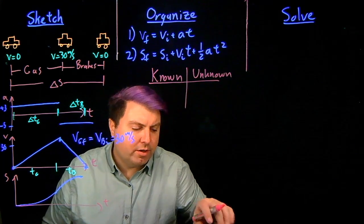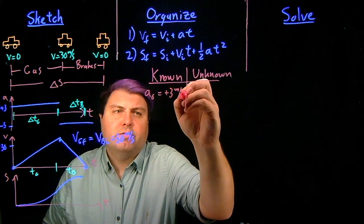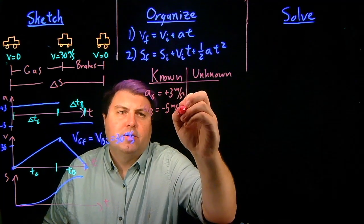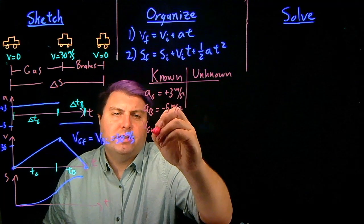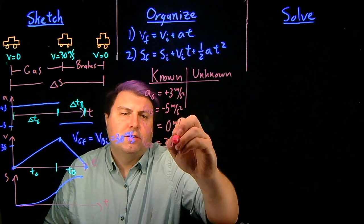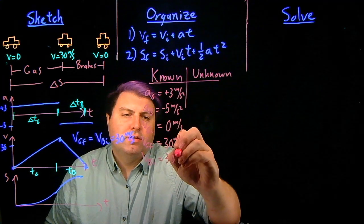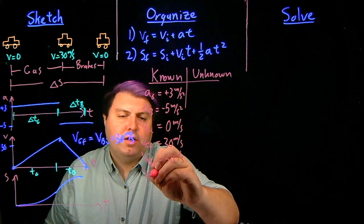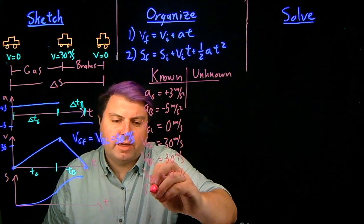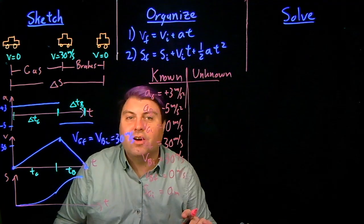So we do know the acceleration when we're gassing is going to be plus three meters per second squared. Our acceleration when braking is negative five meters per second squared. Our velocity while gassing initial is zero. Our velocity while gassing final is 30. Our velocity while braking final is zero. And our position while gassing initial is zero meters. So a lot here.